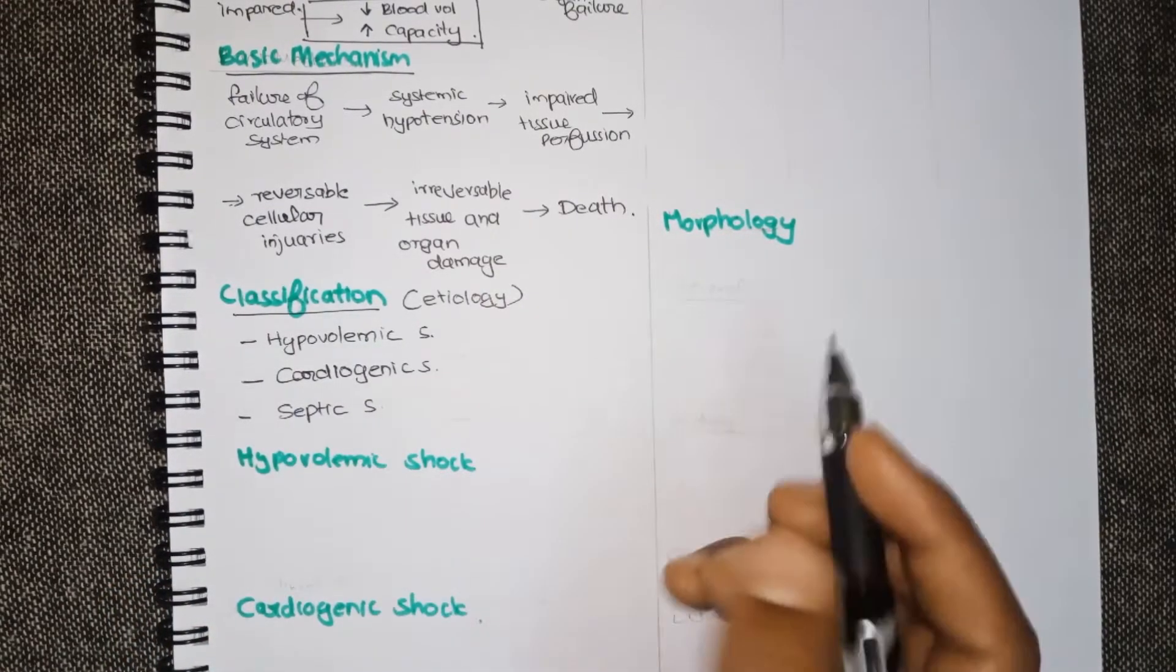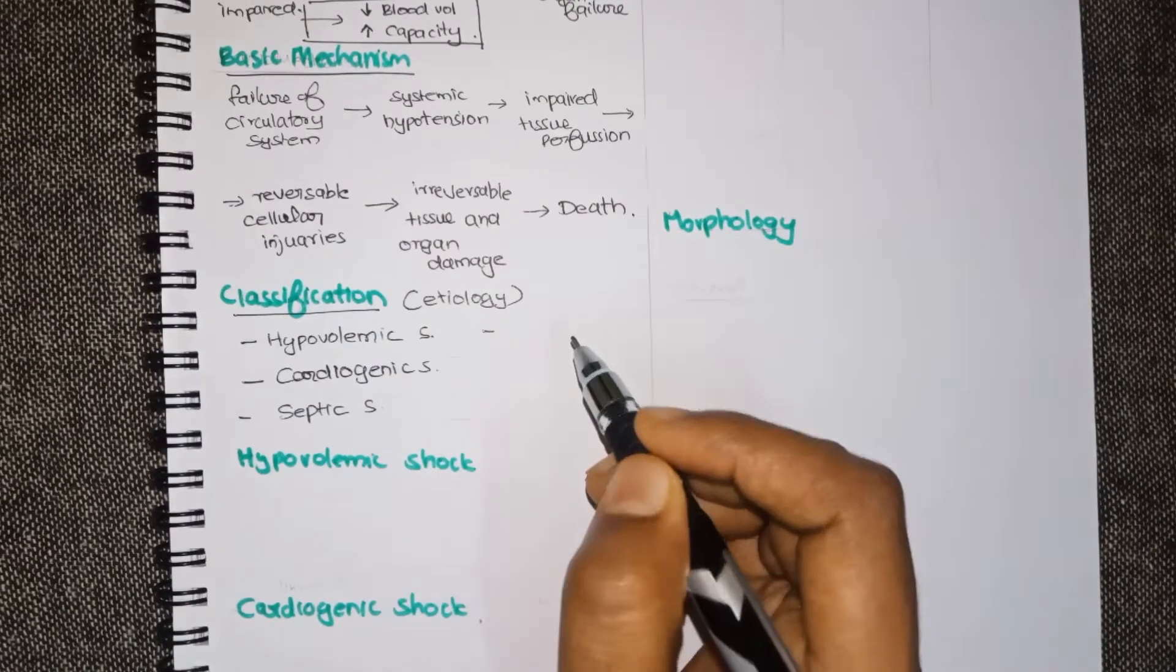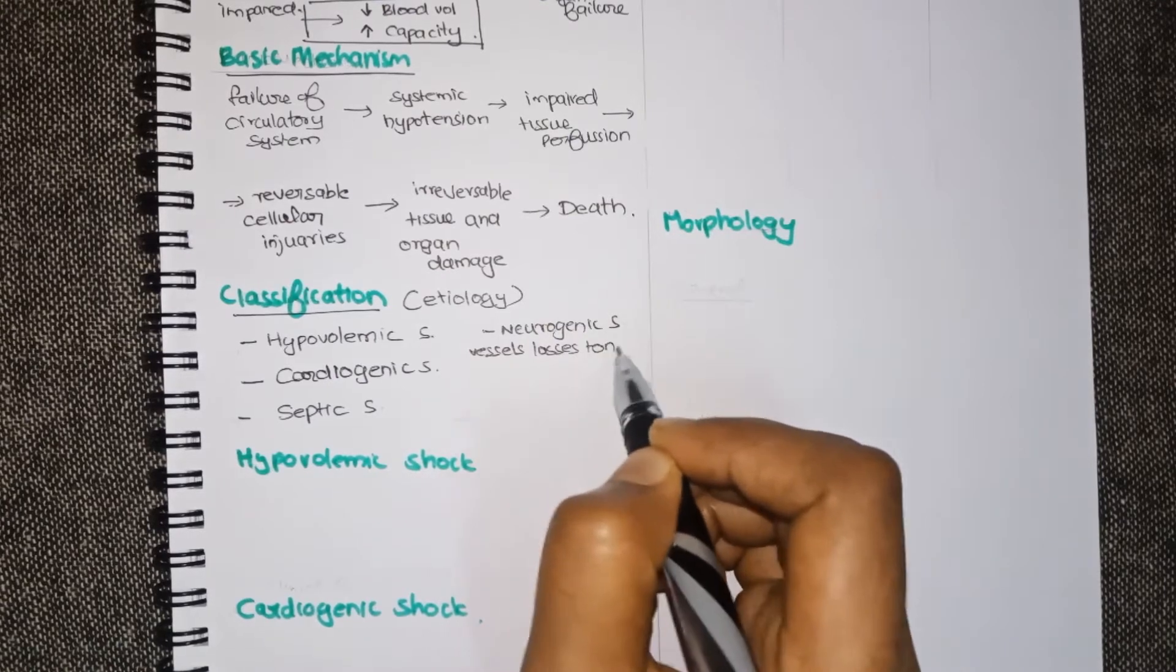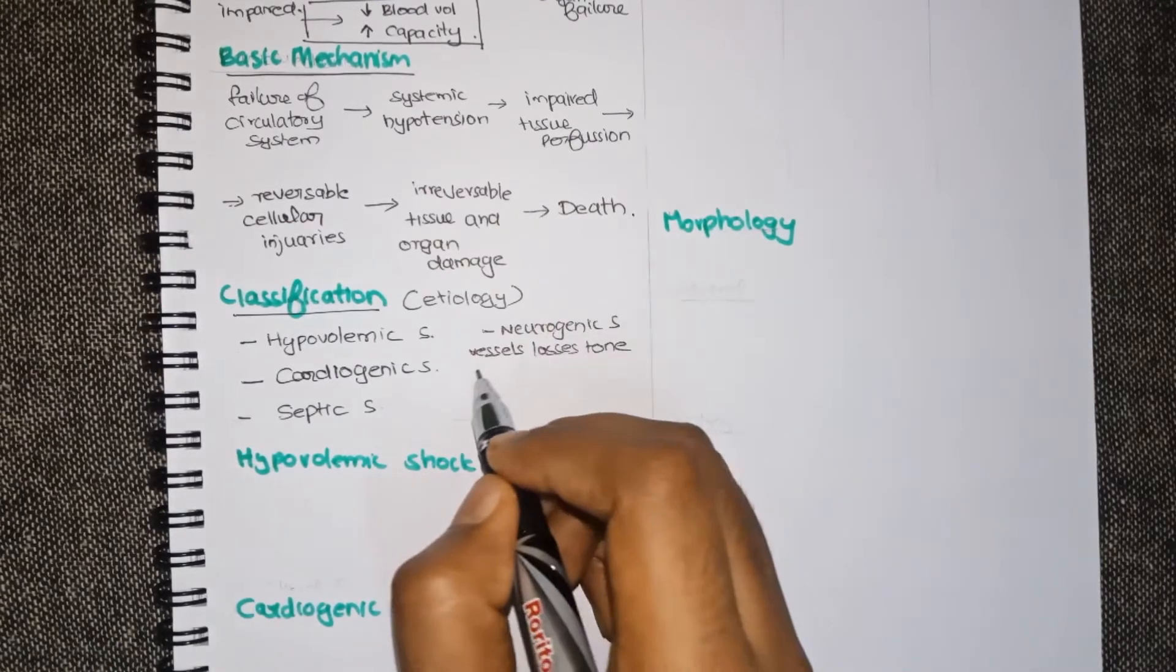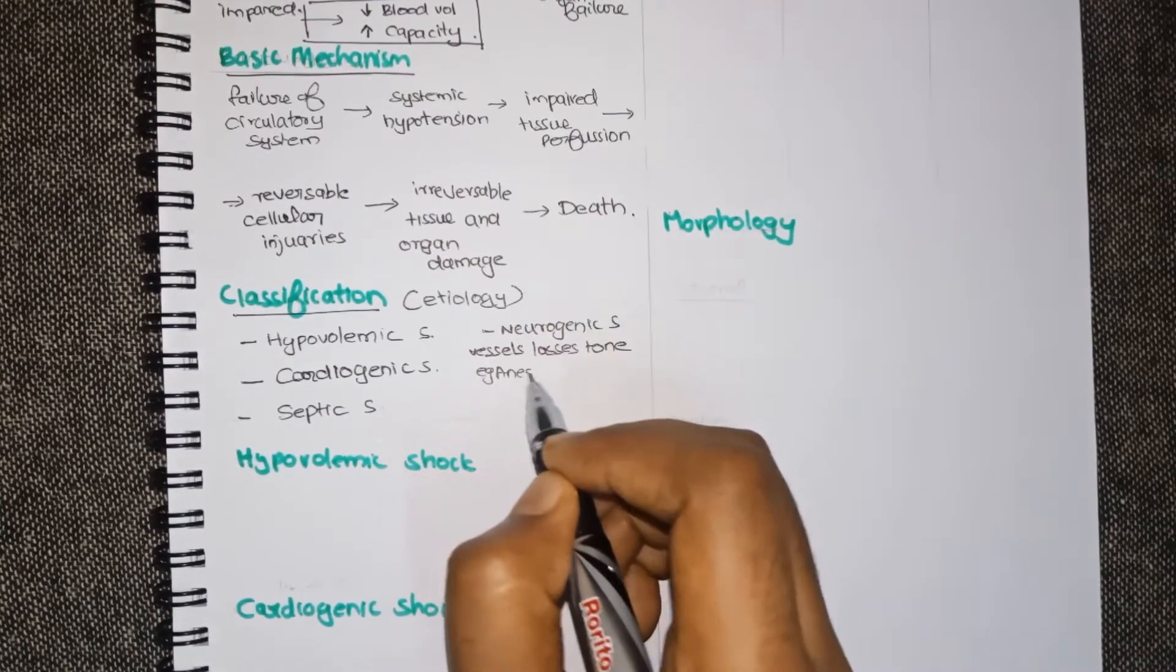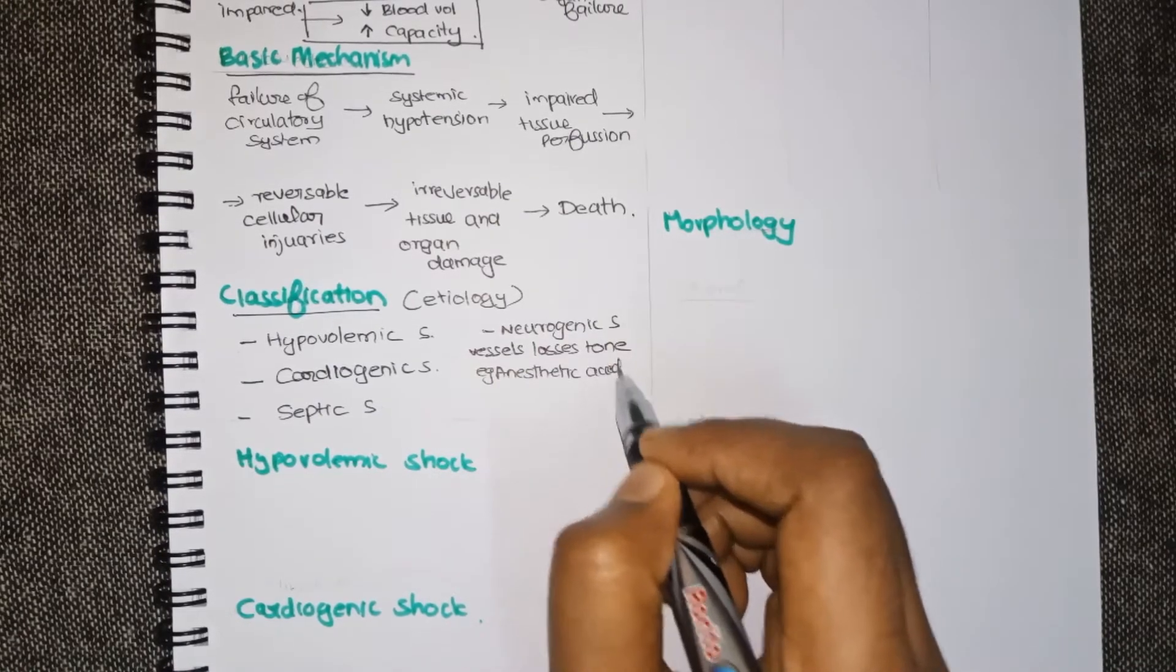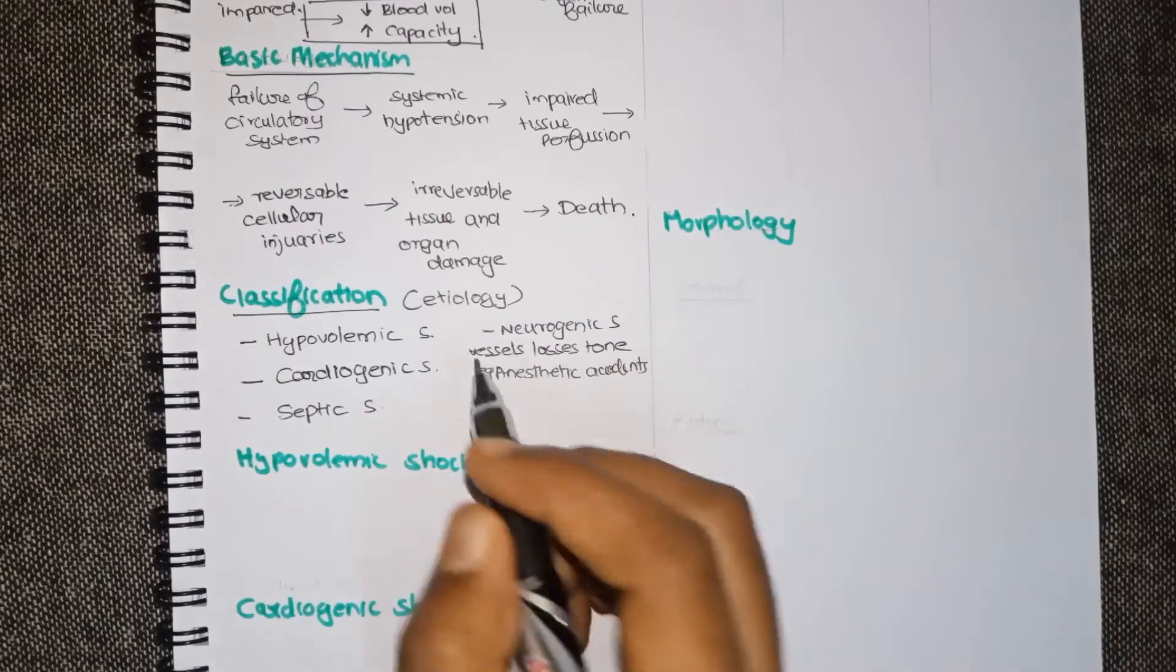There are also other types of shock like neurogenic shock. Here the blood vessels lose their tone. So as we said before there will be increase in the total capacity. An example for this is an anesthetic accident.